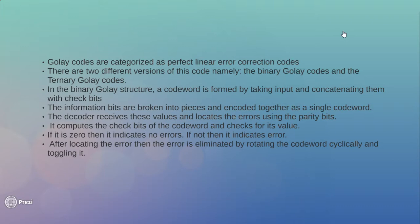In the binary Golay structure, a codeword is formed by taking inputs and concatenating them with the check bits. The information bits are broken into pieces and encoded together into a single codeword.